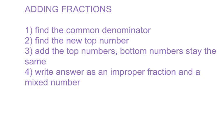So the first thing we're going to talk about is adding fractions, and the first thing you have to do is find the common denominator — which we did last week, where we found the LCD, the least common denominator. Once you find the common denominator, you have to find the new top number. Once you have the new fractions, you're going to add the top numbers, and the bottom numbers stay the same. At the end, you're going to write your answer as an improper fraction and a mixed number, because on Evolve you need to write both. On a quiz, just pay attention to what it says.